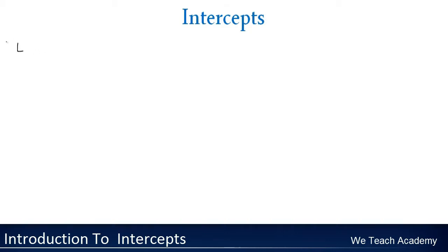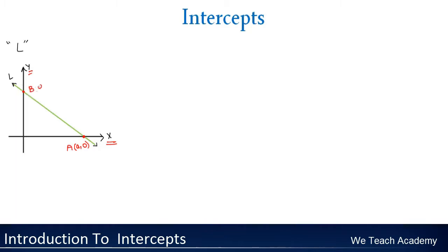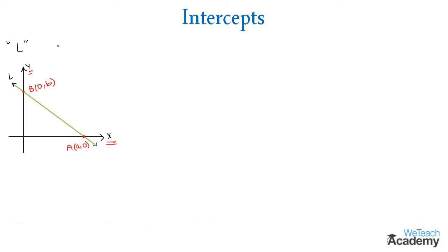So let us consider a straight line L on a coordinate plane. This is the line L which intersects the x-axis at the vertex A with coordinates (A,0) and the y-axis at B (0,B). Then A and B are respectively called the x-intercept and the y-intercept of the line L.